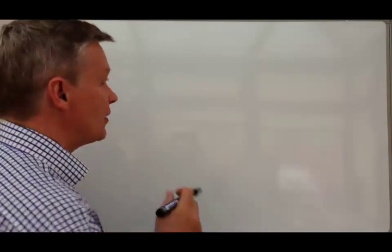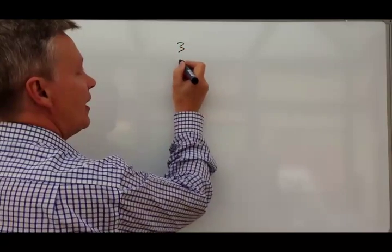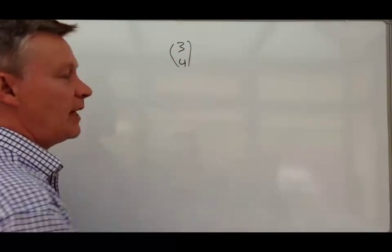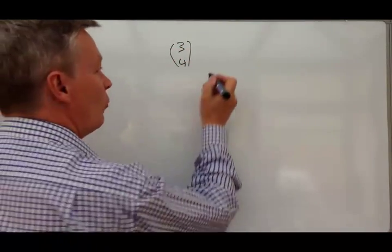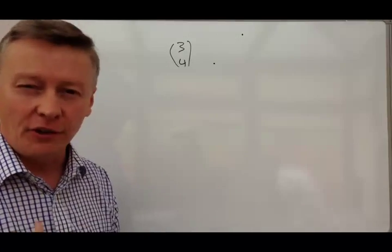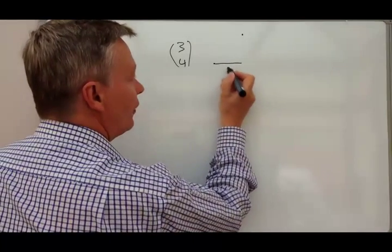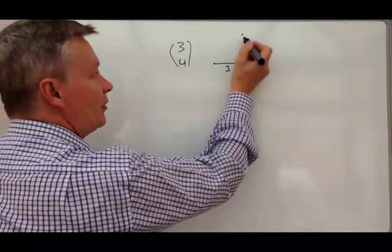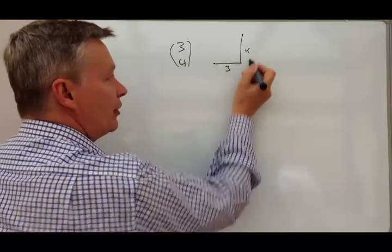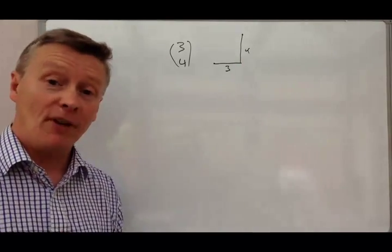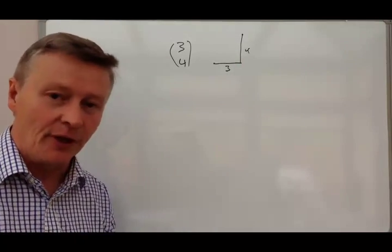Up until this point, you're probably used to seeing vectors written something like this, where what it means is that if you're going from one point to another point, let's say on a graph or something like that, you'll go along three units and then you'll go up four units. And they call that a vector and it's a vector movement.